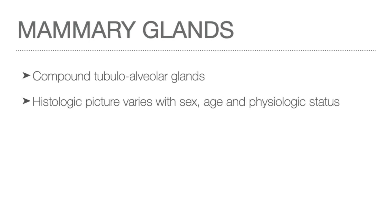The female mammary glands reach their greatest development at age 20. Atrophic changes begin at 40 years and become marked after menopause. The gland undergoes slight changes in size in each menstrual cycle, with its most striking change in size and functional activity occurring during pregnancy and lactation.